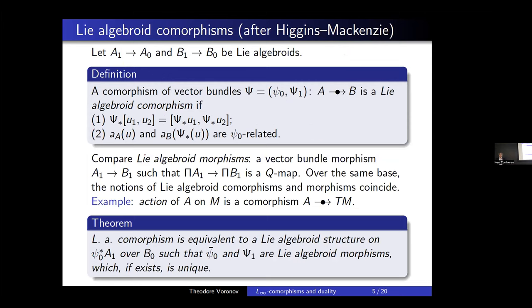Now they introduce the fundamental notion of a Lie algebroid comorphism. A comorphism of vector bundles is a Lie algebroid comorphism if it preserves the brackets — so it is a morphism of algebras — and also there is a relation for anchors: if you have a section and you take the pushforward, then to every section corresponds a vector field obtained by applying the anchor, and these vector fields must be intertwined by the map of the bases.